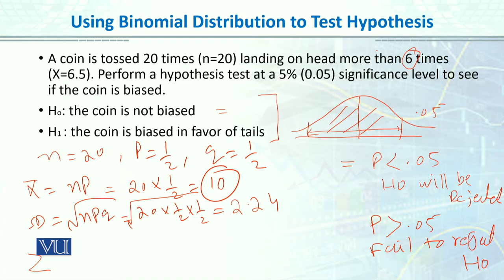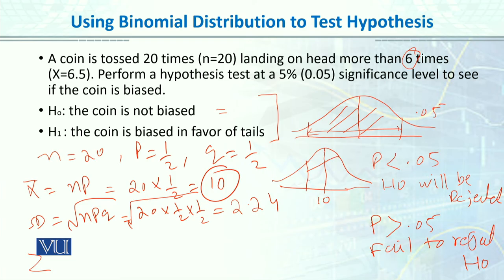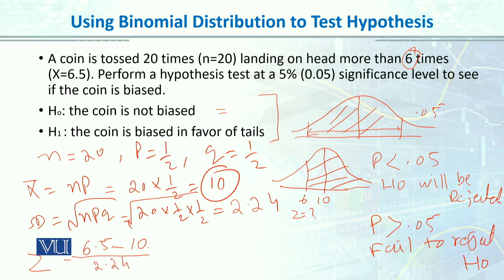Since more than 6 means 6 is on the left side, we need to find the area to the right of 6. Since the mean is 10, 6 falls to the left. Applying continuity correction, x becomes 6.5. So z = (6.5 - mean) / standard deviation = (6.5 - 10) / 2.24, which gives z = 1.56 (in absolute terms). Next, look up the z-table for the area corresponding to 1.56.